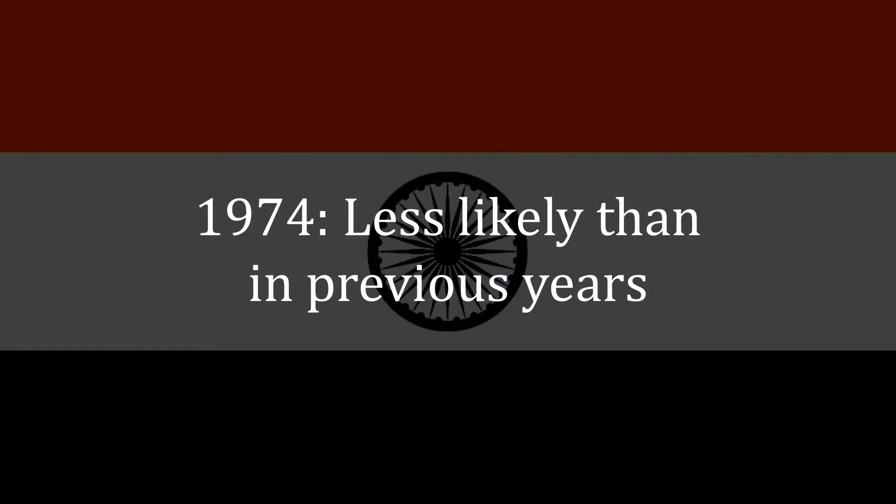In 1974, US estimates placed less likelihood of an Indian nuclear test in that year, as opposed to previous years. Nevertheless, India tested the Smiling Buddha in that year, 1974. Indeed, the failure here was so bad that the United States forced its intelligence agencies to re-evaluate nuclear proliferation capacities and willingness around the world.